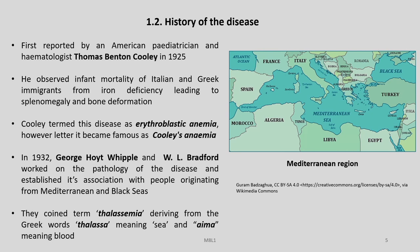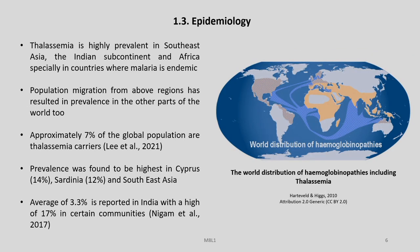They coined the term thalassemia, deriving from the Greek words 'thalasa' meaning sea and 'aima' meaning blood. Thalassemia is highly prevalent in South Asia and in Africa, especially countries where malaria is endemic. Population migration from these regions has resulted in prevalence in other parts of the world too. Approximately 7% of the global population are thalassemia carriers. Prevalence was found to be highest in Cyprus, Sardinia, and Southeast Asia. An average of 3.3% is reported in India with a high of 17% in certain communities.